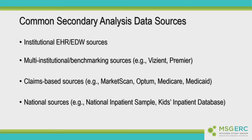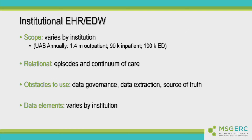These are the very common data sources we see when doing secondary data analysis: institutional sources, multi-institutional benchmarking data sources such as Vizient, claims-based data sources such as MarketScan, Optum, Medicare, and Medicaid data sources, and then national sources such as the National Inpatient Sample or the Children's equivalent called the Kids Inpatient Database. These institutional databases obviously vary by institution. At UAB, our institutional data warehouse has about 100 million outpatient visits per year and about 900,000 inpatient visits per year, which we can mine for a variety of questions.